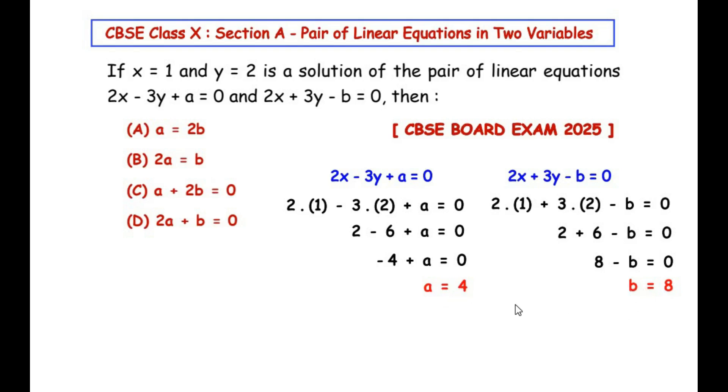So let us see which of the options satisfies these values. Let us consider option A. Under option A we got the value of a as 4, so 4 = let us see if it is equal to 2b. So this becomes 2 times, now the value of b is 8, so here 4 is not equal to 2 times 8 is 16. So here option A is not the correct answer.